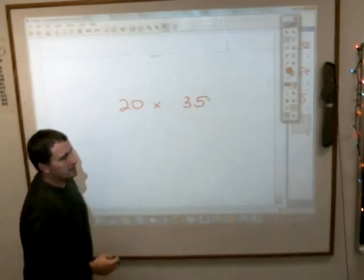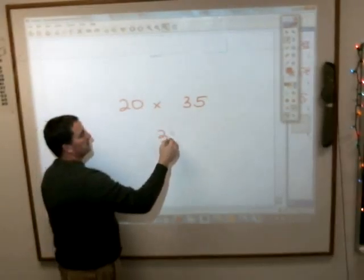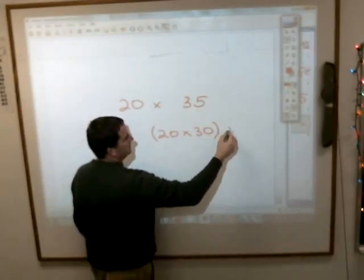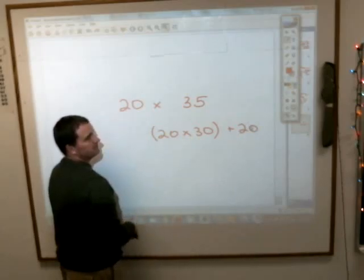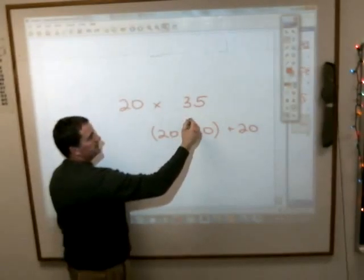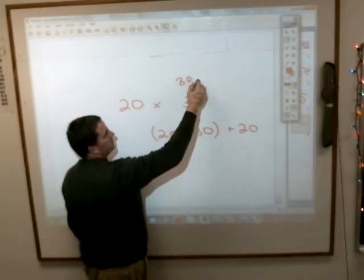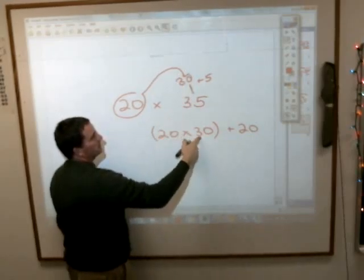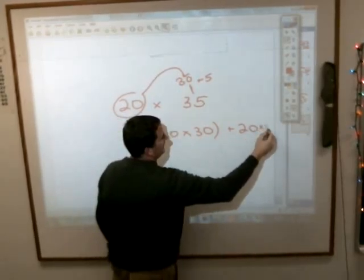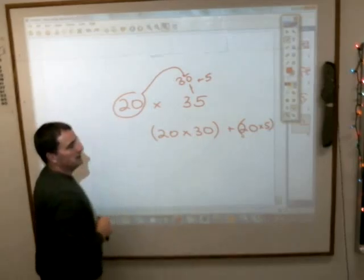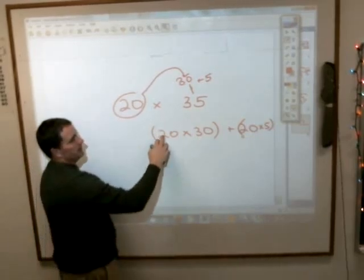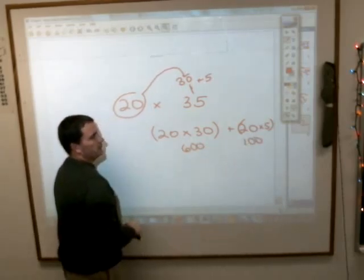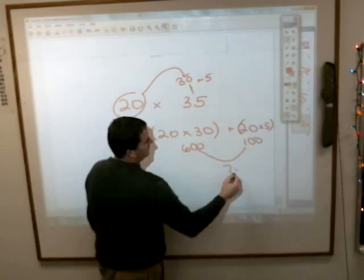20 times 35 is the same thing as taking 20 times 30 and adding it to 20 times what? 35 is the same thing as 30 plus 5. So if you distribute this 20 out, you can take 20 times 30 and then add what 20 times 5 is to it, and you'll get the same answer as you did here. 20 times 30 is 600. 20 times 5 is 100. So 20 times 35 is 700.